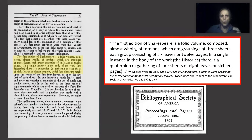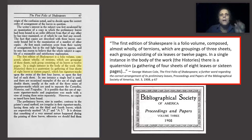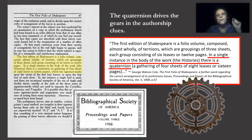As George Watson Cole wrote in his paper 'The First Folio of Shakespeare: A Further Word Regarding the Correct Arrangements of its Preliminary Leaves,' published in Volume 3 of the Proceedings and Papers of the Bibliographic Society of America: the first edition of Shakespeare is a folio volume composed almost wholly of terniums, which are groupings of three sheets, each group consisting of six leaves or twelve pages. In a single instance in the body of the work — The Histories — there is a quaternium, a gathering of four sheets of eight leaves or sixteen pages. The quaternium drives the gears in the authorship clues.